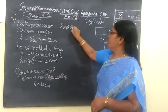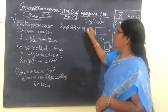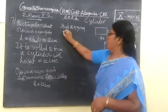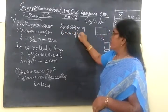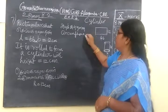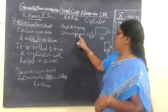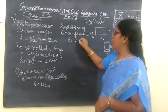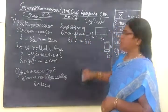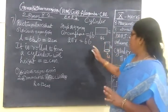This is the circumference. So, circumference equal to 66. Circumference equal to 66. Circumference 2πr equal to 66. Very simple.